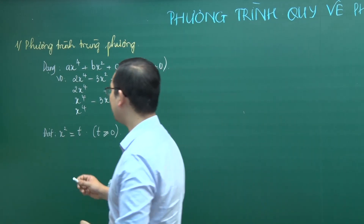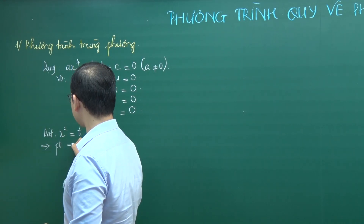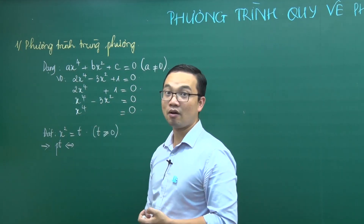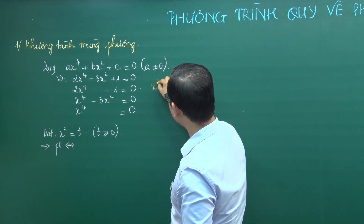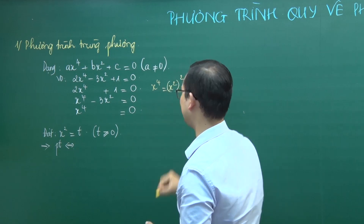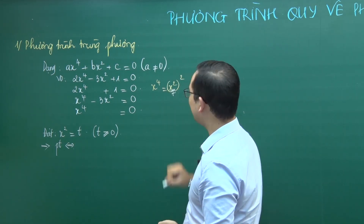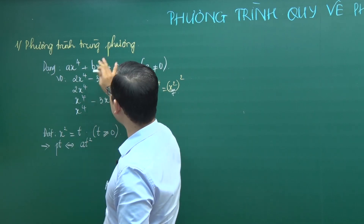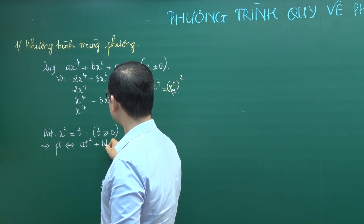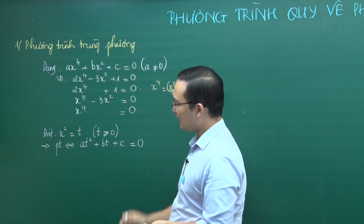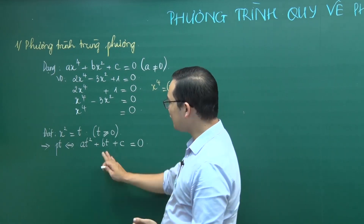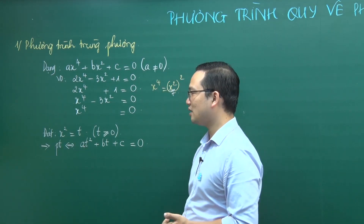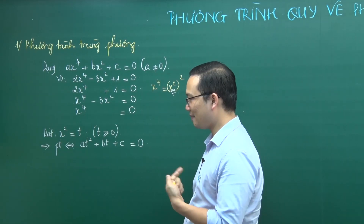Khi đặt x² = t thì phương trình sẽ tương đương. X⁴ thực chất chính là (x²)², mà x² = t, nên x⁴ = t². Các bạn sẽ được phương trình At² + Bt + C = 0. Đây là phương trình bậc 2 theo t. Giải phương trình bậc 2 này, so sánh với điều kiện t ≥ 0, rồi lắp vào biểu thức x² = t để giải ra x.